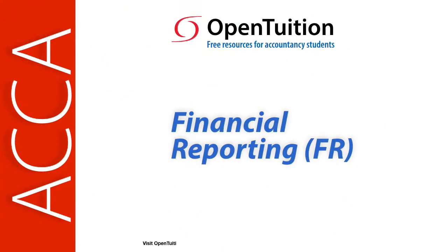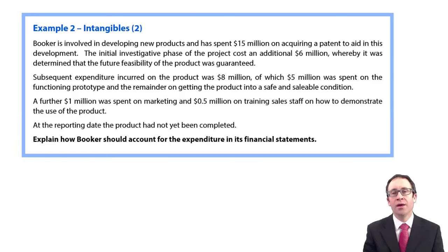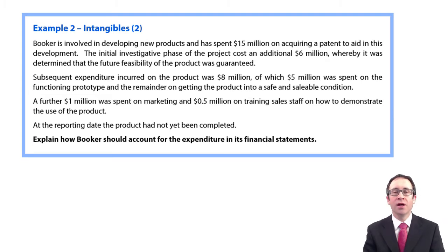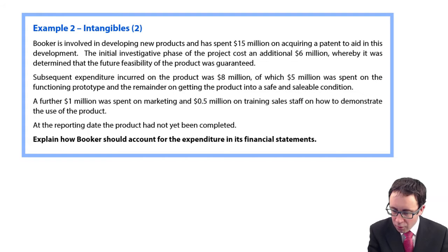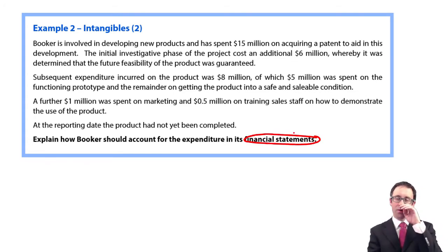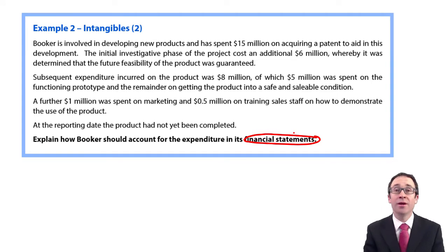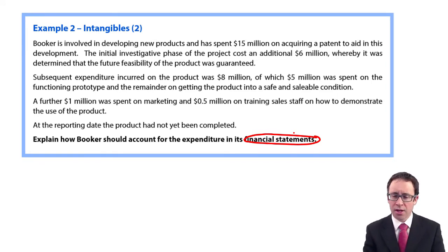This is a lecture from OpenTuition. To benefit from the lecture, you should download the free lecture notes from OpenTuition.com. In this example, it's slightly different in terms of the question, because now we're just going to look at how to account for the intangibles within the financial statement. We're going to focus on the SFP and go through the statement of profit or loss for the various different intangibles that we see within this question.